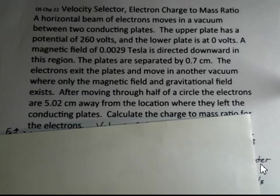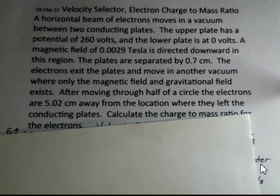The electrons will exit this region into a region where there's only magnetic field. There won't be any electric field, not moving between charged plates. Also a gravitational field, but we're going to ignore that. We'll show a calculation at the end of why we can ignore that.